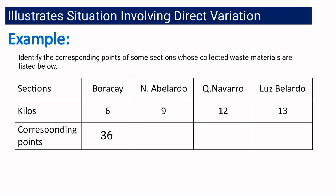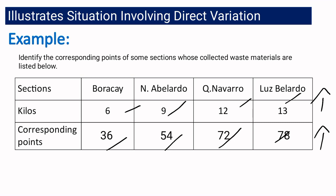Very good — 36 points. If Nicanor Abilardo collects nine kilos of paper, they will receive 54 points. A 12-kilo collection for Quirino Navarro gives them 72 points. And if Luz Belardo collects 13 kilos of paper, they will have 78 points. We can say this situation illustrates direct variation because, looking at the kilo values — 6, 9, 12, and 13 — the trend is increasing. And the corresponding points — 36, 54, 72, 78 — also increase.